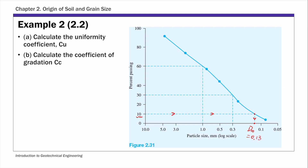For d30, you start from 30% passing, or 30% finer, on the y-axis, and then read the corresponding x-axis value. So d30 in this case is 0.3.